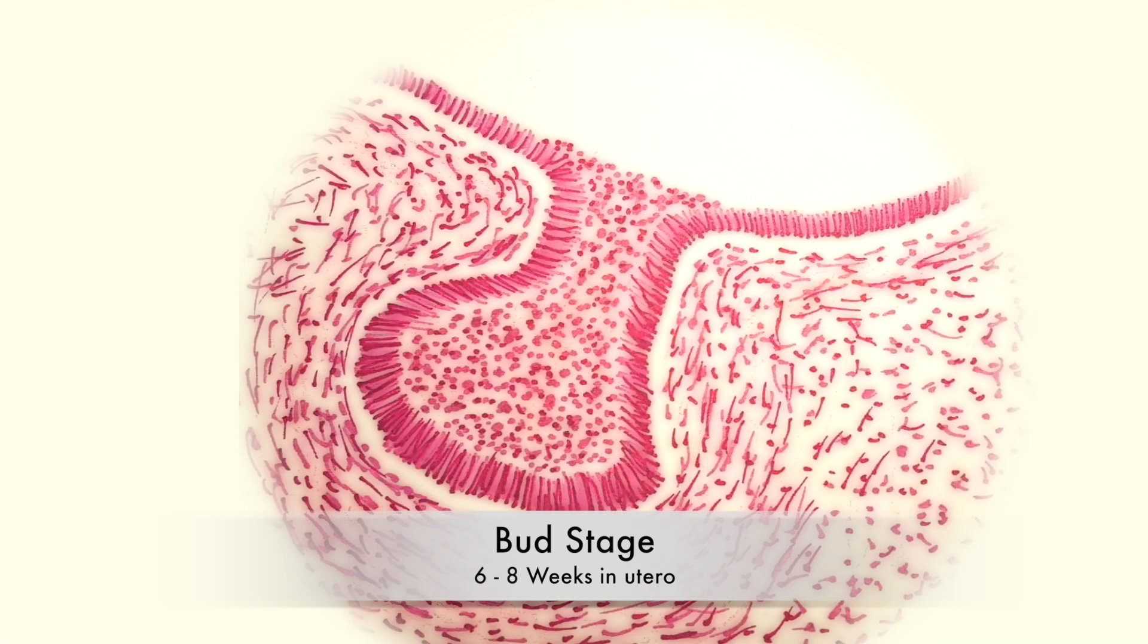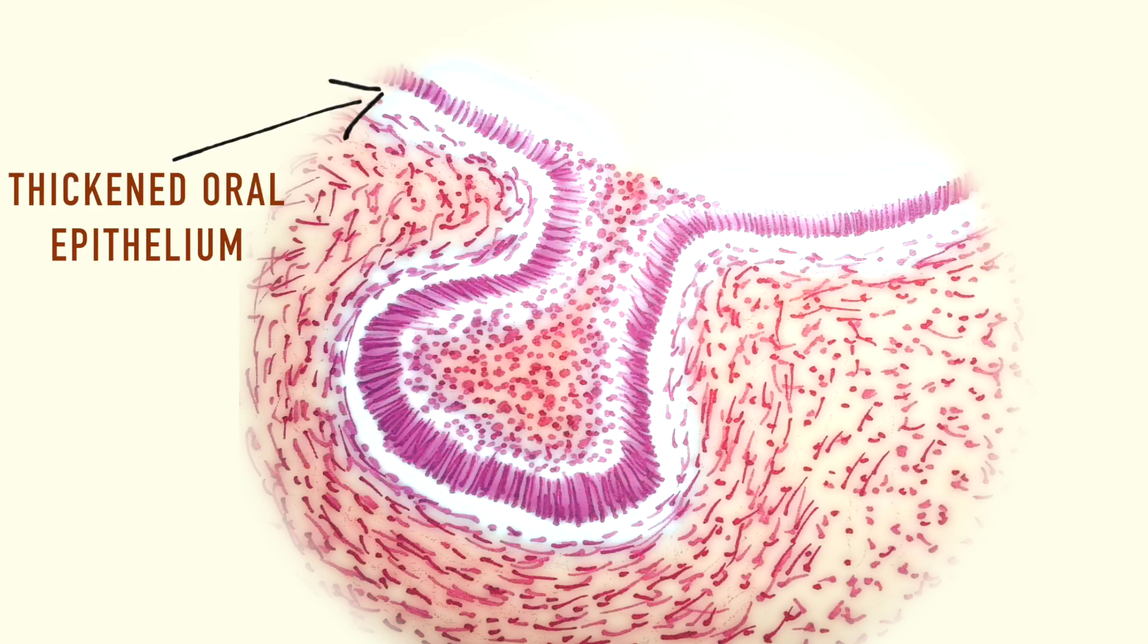Odontogenesis begins with the bud stage or the initiation and physiologic stage. It follows a thickening of the oral epithelium in embryonic development in the fifth week which forms the dental lamina.